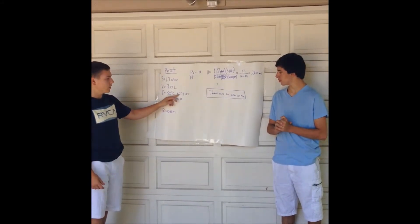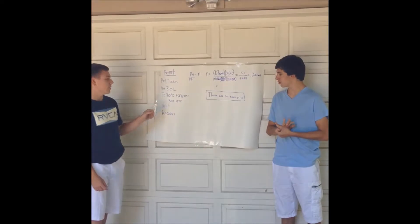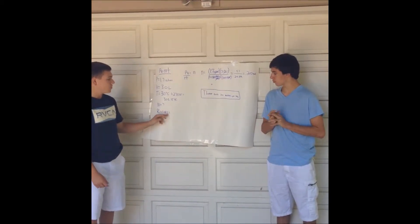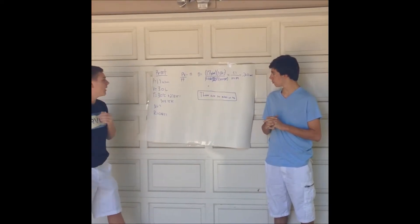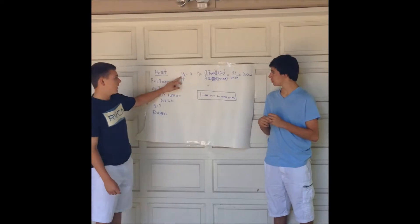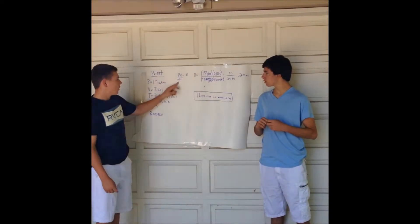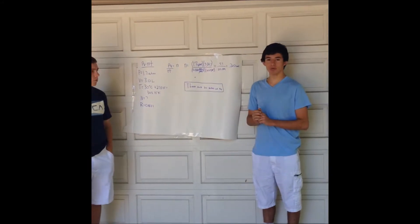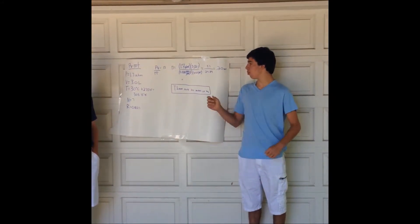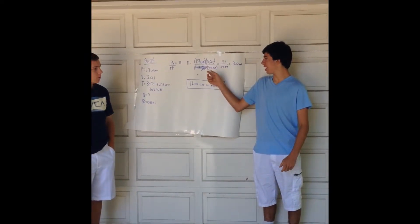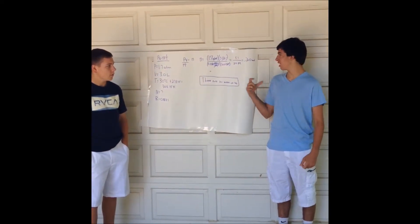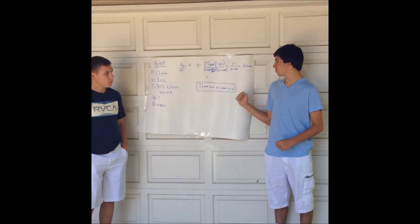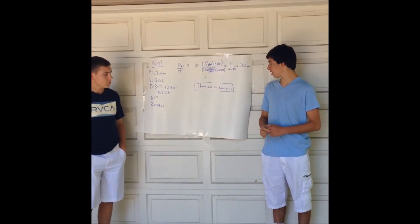In order to get Kelvin, you have to divide RT on both sides of the equation. This gives us 1.7 atm times 3.0 liters over 0.0821 moles times liters over atm times Kelvin, times 303.15 Kelvin. That gives us 5.1 over 24.89, and when you divide that you get 0.20 moles. So there are 0.20 moles of N2, which is nitrogen.